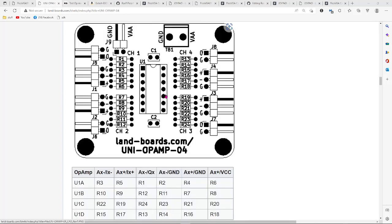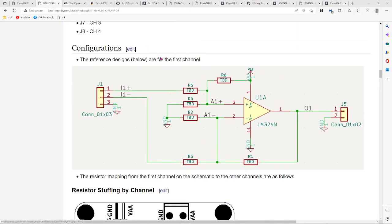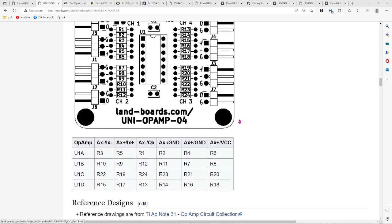Here's a chart that shows the configuration, the different resistor reference designators for each of the channels. For instance, AX minus through IX minus would be R3, which is the resistor that goes between the input minus and the op amp input minus.